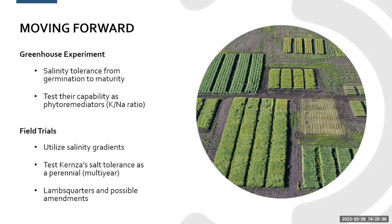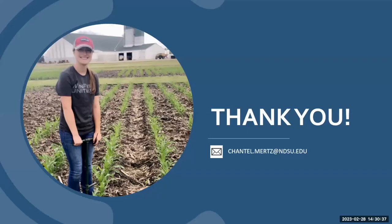Moving forward, we want to do a greenhouse experiment going from germination to maturity using much higher salinity levels, since lambsquarters never decreased in biomass we need to find its actual salinity tolerance threshold. We also want to test their capability as phytoremediators — can they take up salt and be harvested to remove it from the area? We also plan field trials, possibly this summer in Carrington, using natural salinity gradients to test kernza in a multi-year perennial experiment, as well as testing lambsquarters with calcium acetate, which can help under saline and osmotic stress conditions.